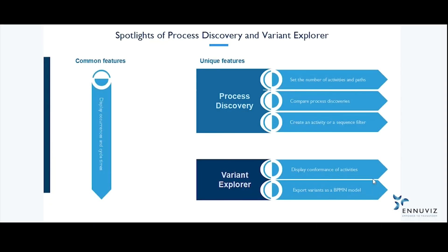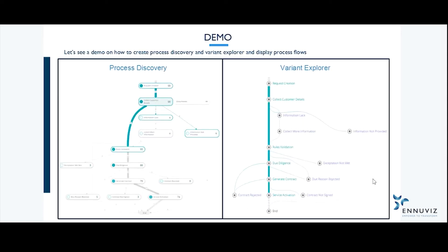Moving on to the spotlight of Process Discovery and Variant Explorer — the common features are occurrences and cycle times. Unique features of Process Discovery are compare and create an activity or a sequence filter. For Variant Explorer, we can export variants as a BPMN model. This is an overview where we are comparing Process Discovery as well as Variant Explorer.